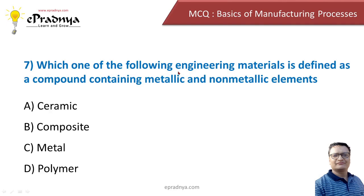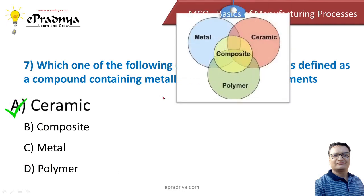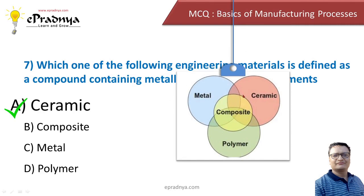Which one of the following engineering materials is defined as a compound containing metallic and non-metallic elements? Options: ceramic, composite, metal, and polymer. The correct answer is ceramic. Ceramic is the material that is a compound containing metallic and non-metallic elements. The four main categories of engineering materials are metals, ceramics, polymers, and composites.